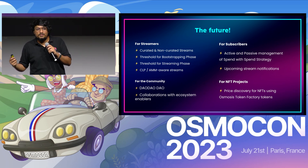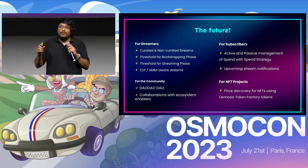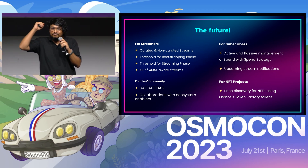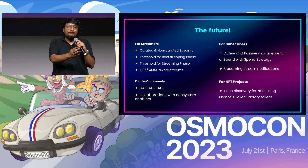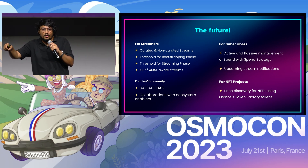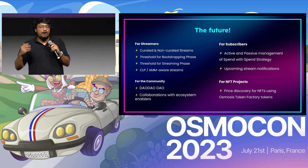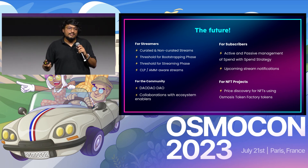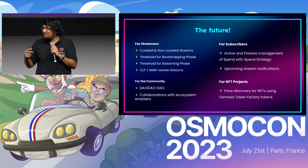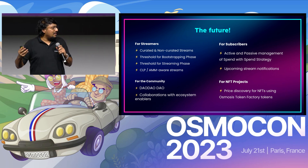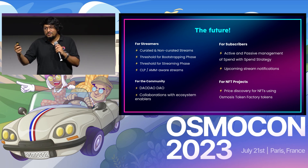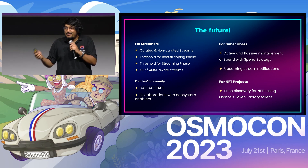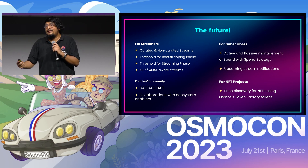For subscribers, active and passive management of their position is important — their spend strategy can be determined. So if you want to spend $100 worth of Osmo, Atom, or USDC, you should be able to do that within a range: only spend when you're getting the streaming token at a set price; otherwise, the protocol holds back. Upcoming stream notifications are also important and have been requested. From a community standpoint, we are planning to launch a DAO DAO on Osmosis — currently it's a membership-based DAO. We also have collaborations with ecosystem enablers and accelerators. NFT projects can also utilize StreamSwap to discover the price for their NFT project.